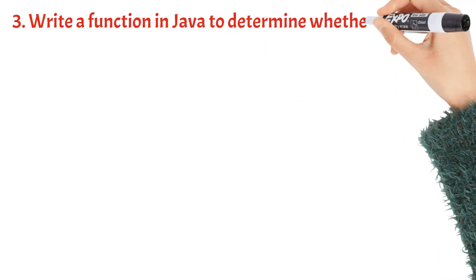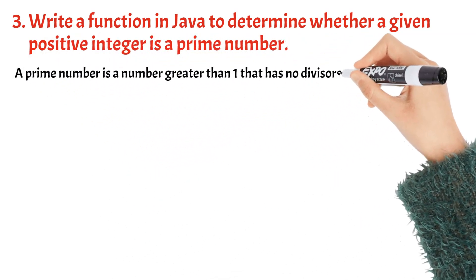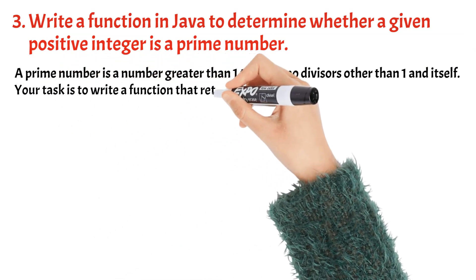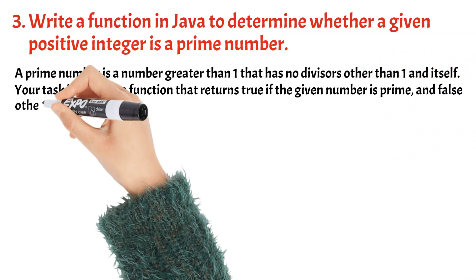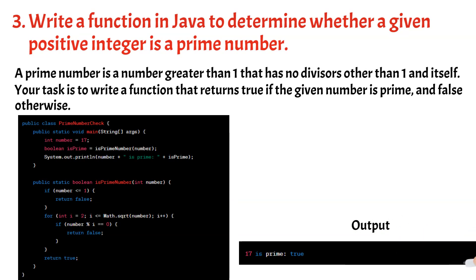Write a function in Java to determine whether a given positive integer is a prime number. A prime number is a number greater than 1 that has no divisors other than 1 and itself. Your task is to write a function that returns true if the given number is prime and false otherwise. In this example, the isPrimeNumber method takes a positive integer as input and checks if it is prime. It starts by checking if the number is less than or equal to 1, in which case it immediately returns false. Then, using a for loop, it iterates from 2 to the square root of the number and checks if the number is divisible evenly by any value within this range. If it finds a divisor, it returns false as the number is not prime. If no divisors are found, it returns true, indicating that the number is prime.